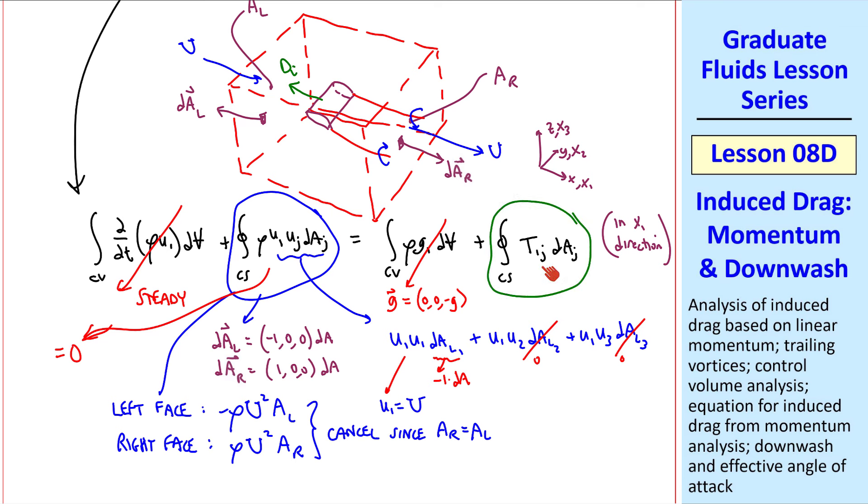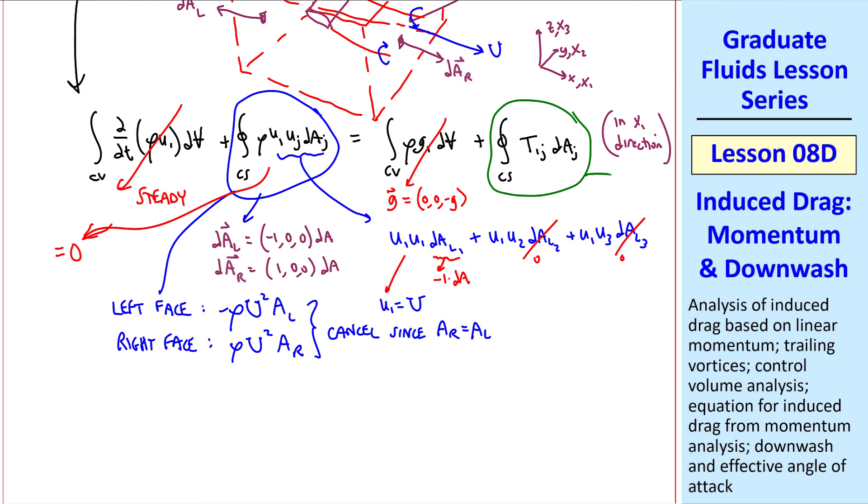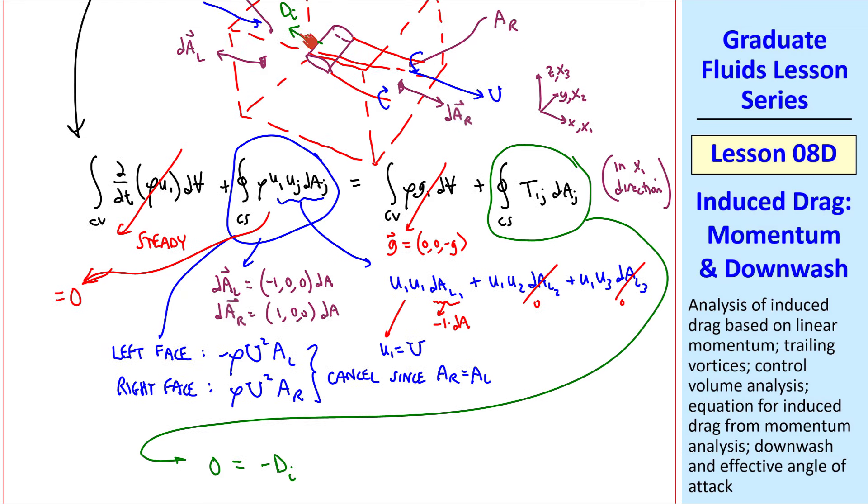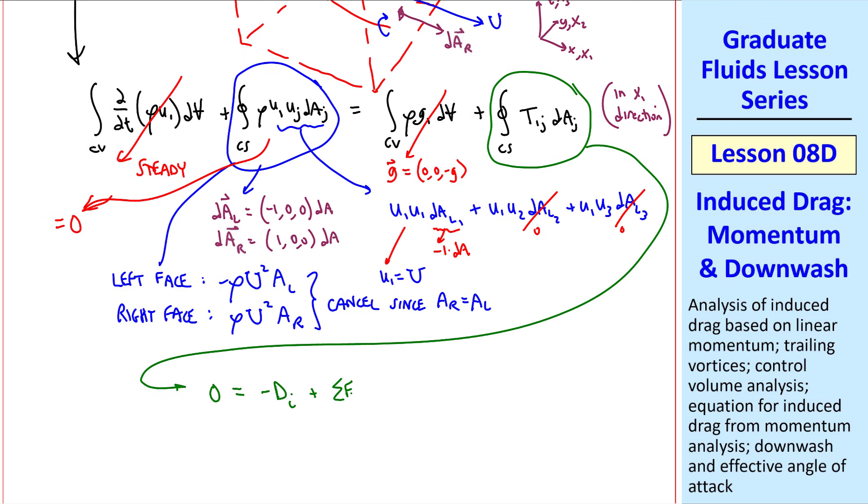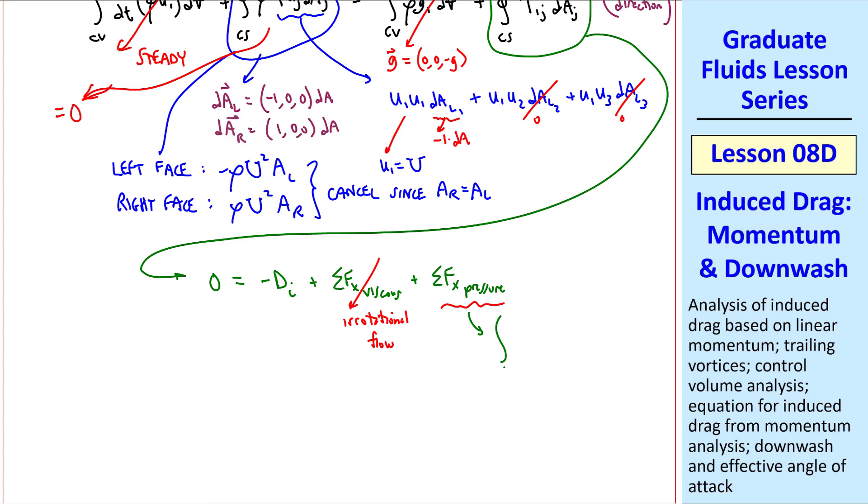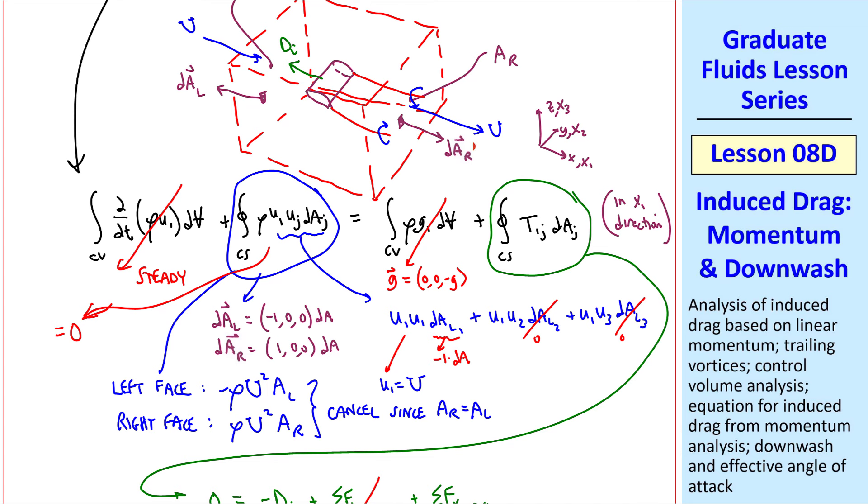All we're left with, then, is this term. This includes all the surface forces acting on the right and the left surfaces. Since everything's symmetric, the top and bottom and left and right surfaces do not contribute anything in the X direction. Let's expand this term out. Since it's the only term left in the equation, 0 equal the sum of all the forces, which is negative Di, the induced drag acting on the air by the wing, we can think of that as our sigma F other, plus sigma Fx viscous, plus sigma Fx pressure. Well, viscous effects are insignificant, since this is an irrotational flow.